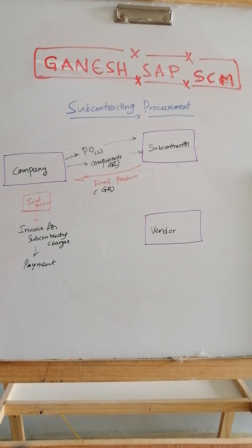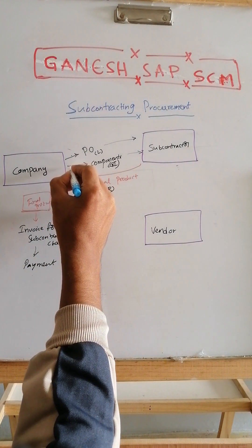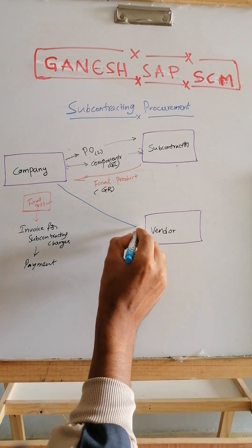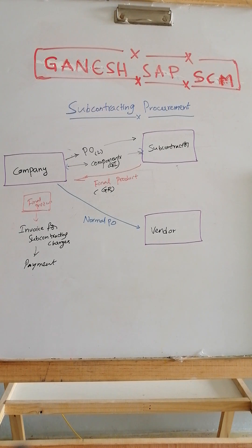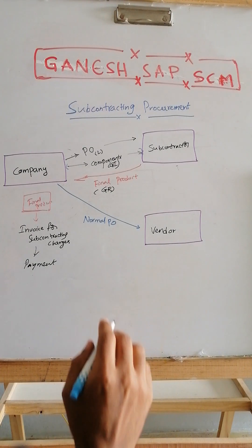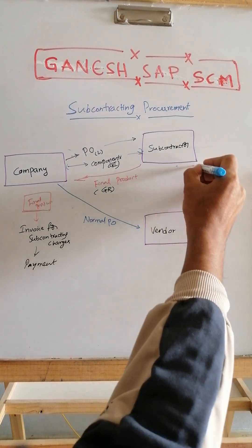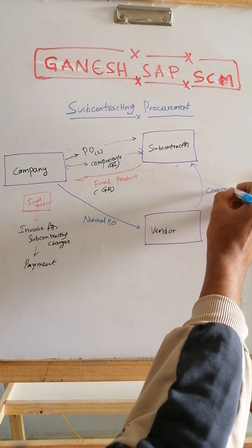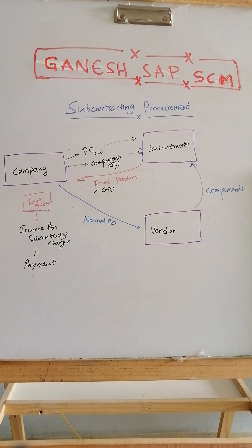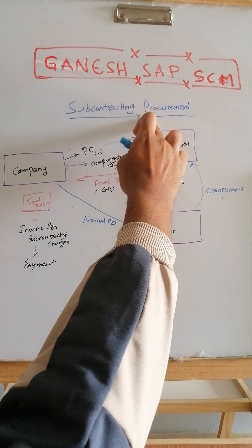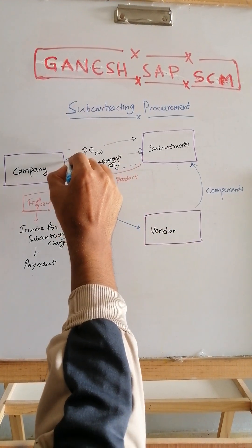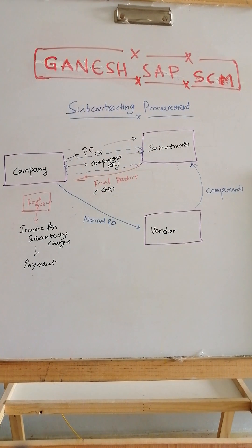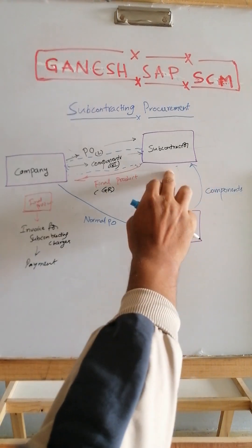Now, regarding the normal vendor shown in the diagram — for a normal vendor, the company does not send components directly. Instead, the company creates a normal PO to the vendor, and in the delivery address there is a flag called SC vendor. When that SC vendor flag is set, the delivery address of the materials becomes the subcontractor's address, so the vendor sends the components directly to the subcontractor.